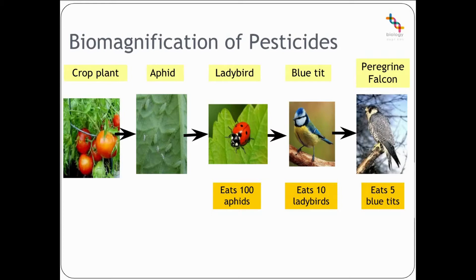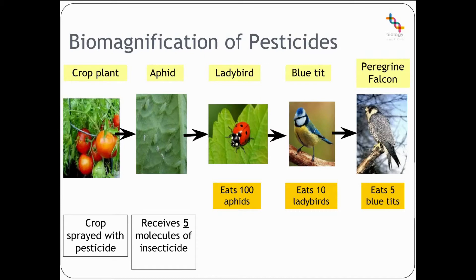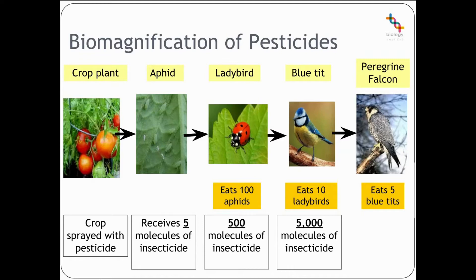One of the key issues we have with pesticides is that of biomagnification, where the pesticide concentration increases at each trophic level of our food chain. If we look here, we've got our crop plant — our tomato plant — sprayed with our pesticide. Our aphid comes along and eats the crop plant and consequently receives five molecules of insecticide. The ladybird eats 100 aphids and winds up with 500 molecules. Our bluetit eats 10 ladybirds and has 5,000 molecules. The peregrine falcon eats five bluetits and winds up with 25,000 molecules of insecticide. That is the process referred to as biomagnification.